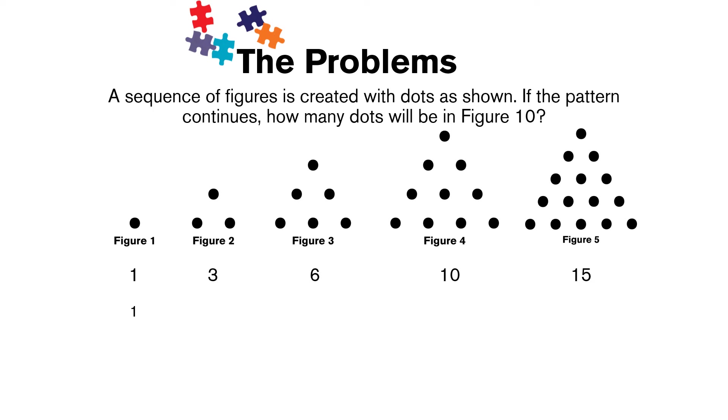Figure 1 is just 1, and then when we draw figure 2, we're adding another row, and that row has one more dot than the previous row. So we're taking 1 and adding 2. For figure 3, we're making another row with one more dot than the last one, so it's 1 plus 2 plus 3. Following this pattern for figure 4, it's 1 plus 2 plus 3 plus 4, and figure 5 is 1 plus 2 plus 3 plus 4 plus 5. So what we're doing is just adding consecutive integers together.